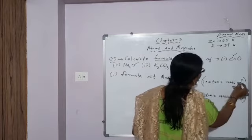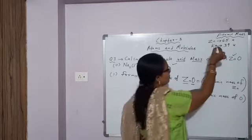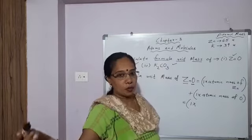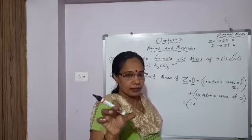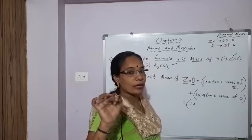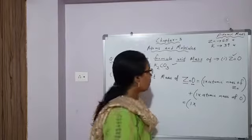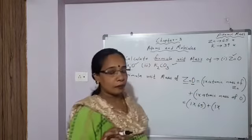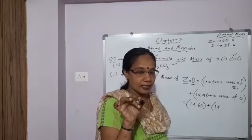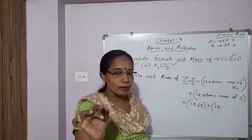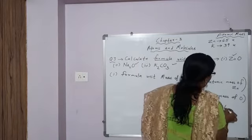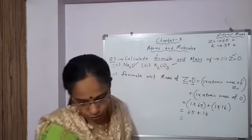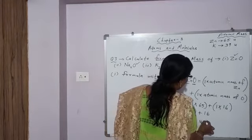One times the atomic mass of zinc — the atomic mass of zinc is 65. Students, add this to your list of symbols, atomic numbers, and atomic masses. The atomic mass of zinc is 65. So: one times 65, plus one times the atomic mass of oxygen. The atomic number of oxygen is 8, so double of 8 is 16 — the atomic mass of oxygen is 16. Therefore 65 plus 16 equals 81 u, where u means unified mass.